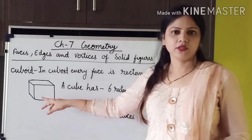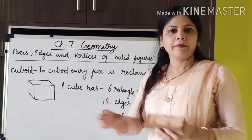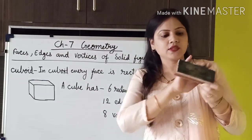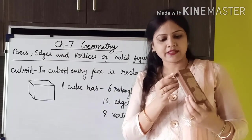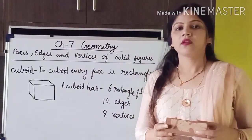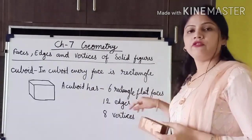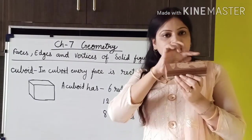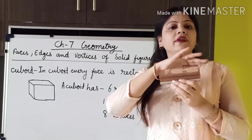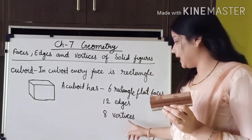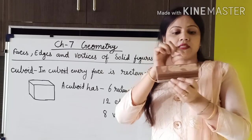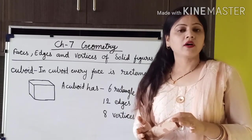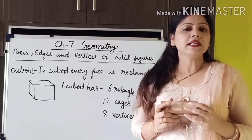Here I have drawn a cuboid. A cuboid is similar to a cube but rectangle in shape. In a cuboid, every face is rectangle. A cuboid has six rectangle flat faces, twelve edges, and eight vertices. Some examples of cuboid are duster, tiffin box, pencil box, and bricks. Just pause this video and write these things also in your maths copy.